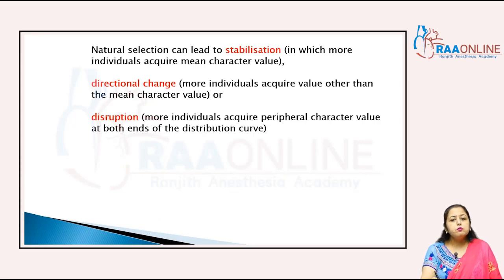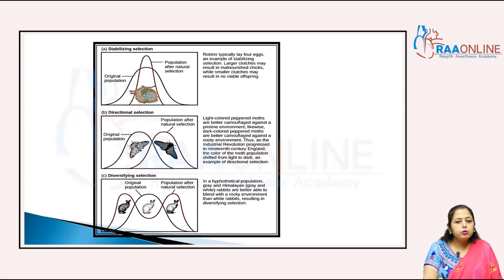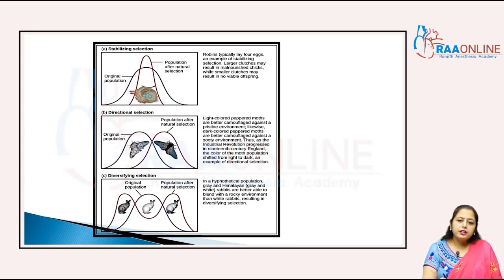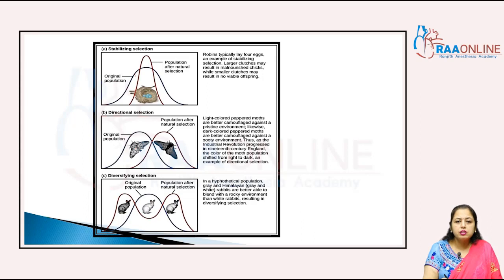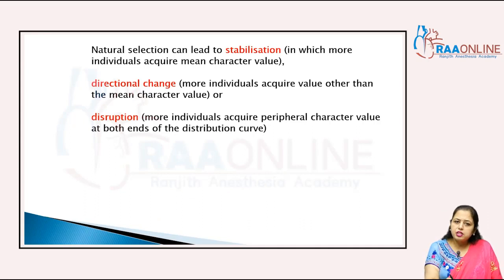In directional changes, more individuals acquire a value other than the mean character value. You can see the original population and the population after natural selection — the white moths and the black moths. That is the directional population showing pre-industrialization, industrial melanism, and post-industrialization.